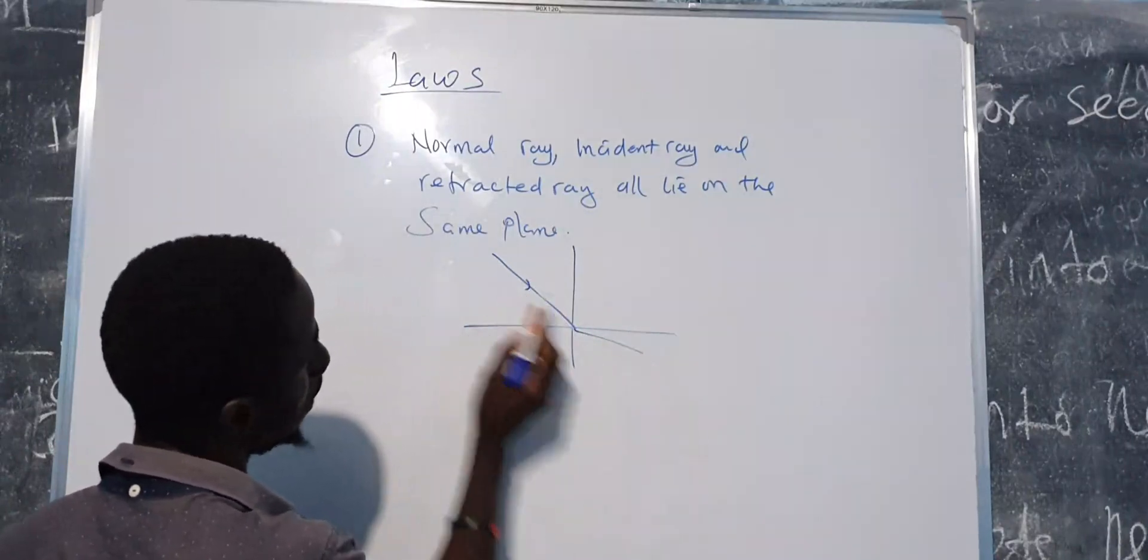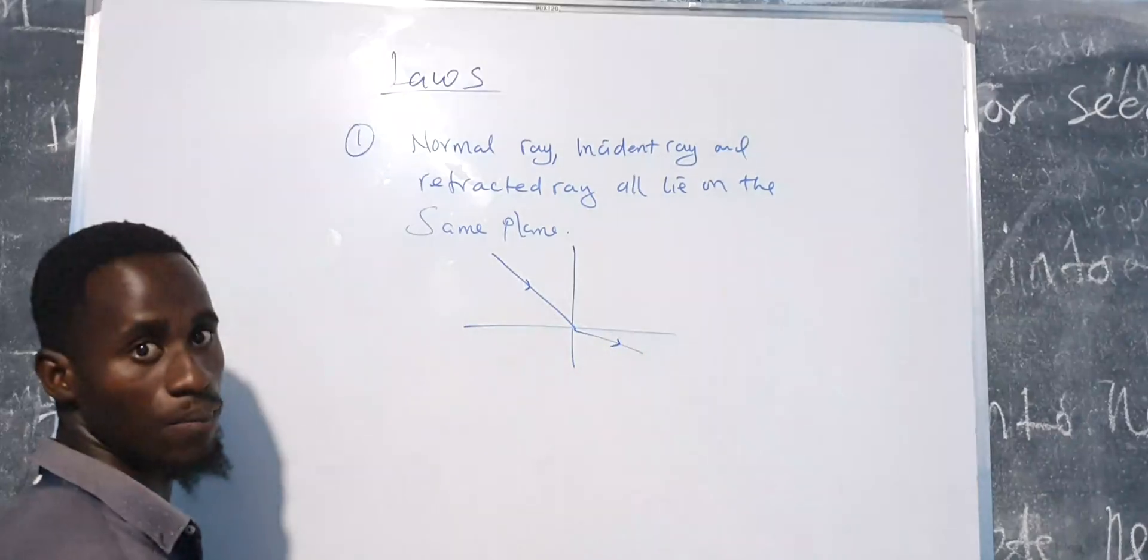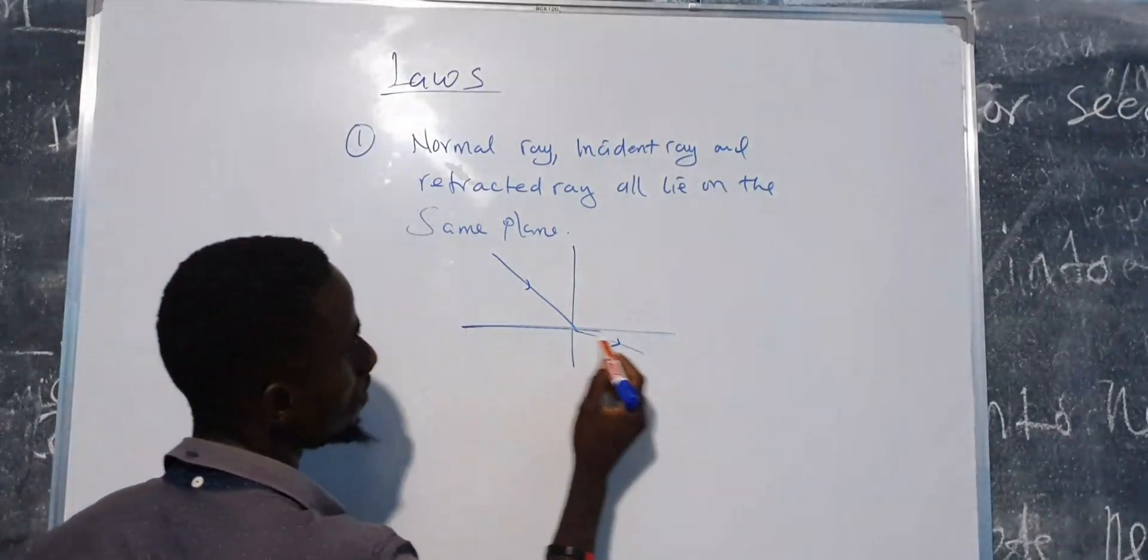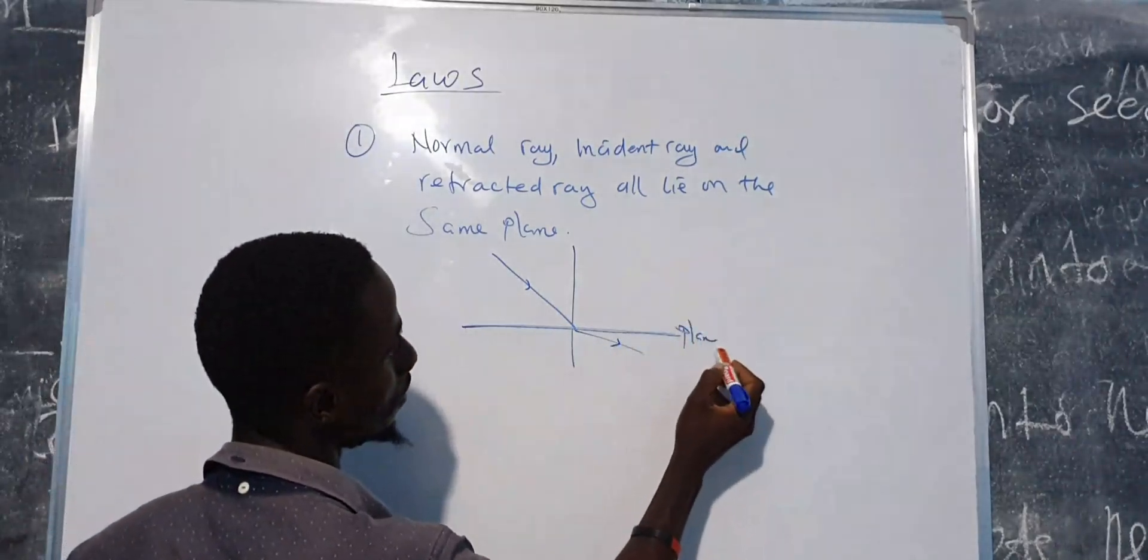What we mean is this: so this is the incident ray, that's the refracted ray. They are both on the same plane. This is a plane.